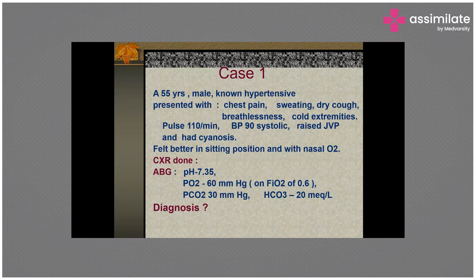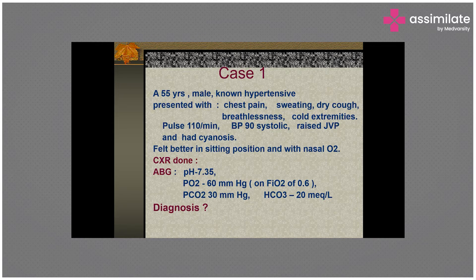The patient felt better in the sitting position and was not comfortable lying down. He needs oxygen support. His chest X-ray was done and ABG shows pH 7.35, PO2 60, PCO2 30 mmHg, and bicarbonate 20. What is the diagnosis?